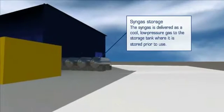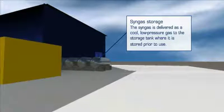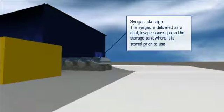While the syngas is now ready to be fed into the gas engines, a small proportion is diverted and compressed at high pressure to provide buffer storage capacity. This storage facility compensates for fluctuations in the demand from the gas engines.